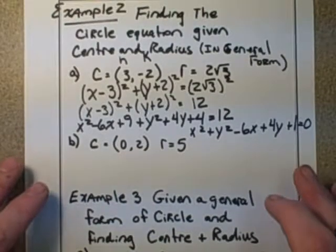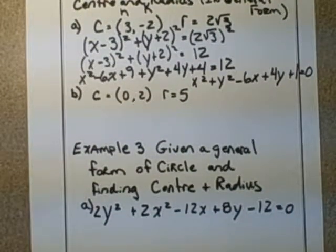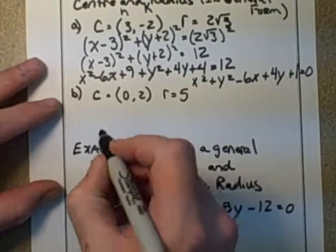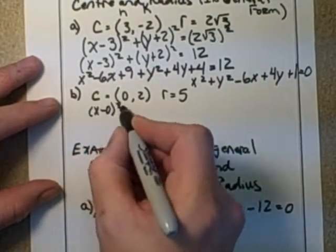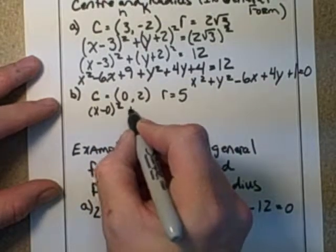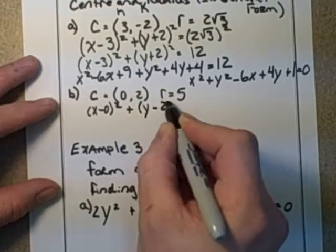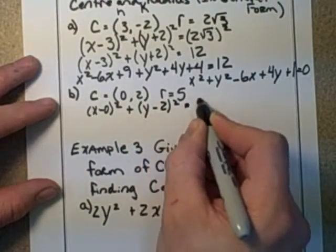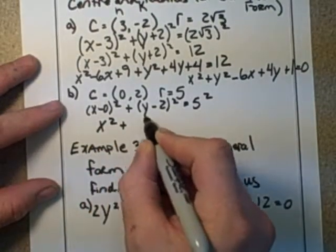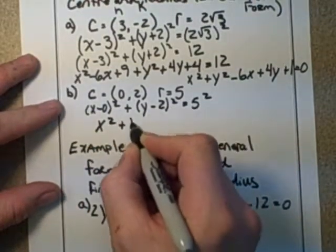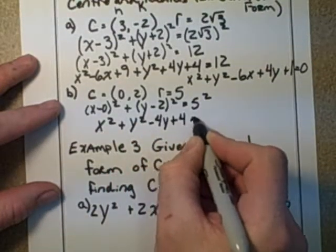I should have left a little more space there. What happens if you have a similar example with a 0 in it? Well, a similar thing happens. The (x-0)² + (y-2)² = 5². So this would just be x², plus let's expand this out, y² - 4y + 4 = 25.